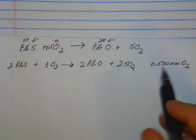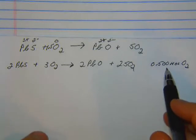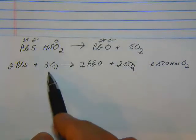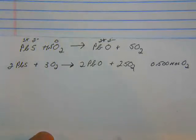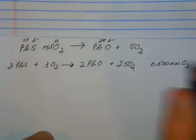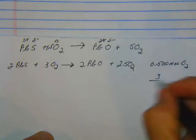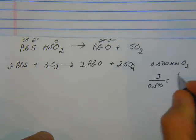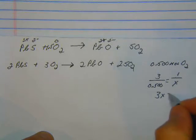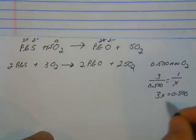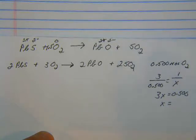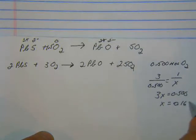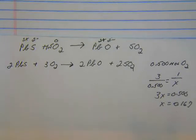The next step, we're given the number of moles of O2 that's being used, but that has a coefficient of 3. We want to find out what it is for 1. So we know that the coefficient is 3 here, and that's where 0.500, but we want to find that ratio where it's just 1. So 3x equals 0.500, and x equals 0.167. So now we've got that.